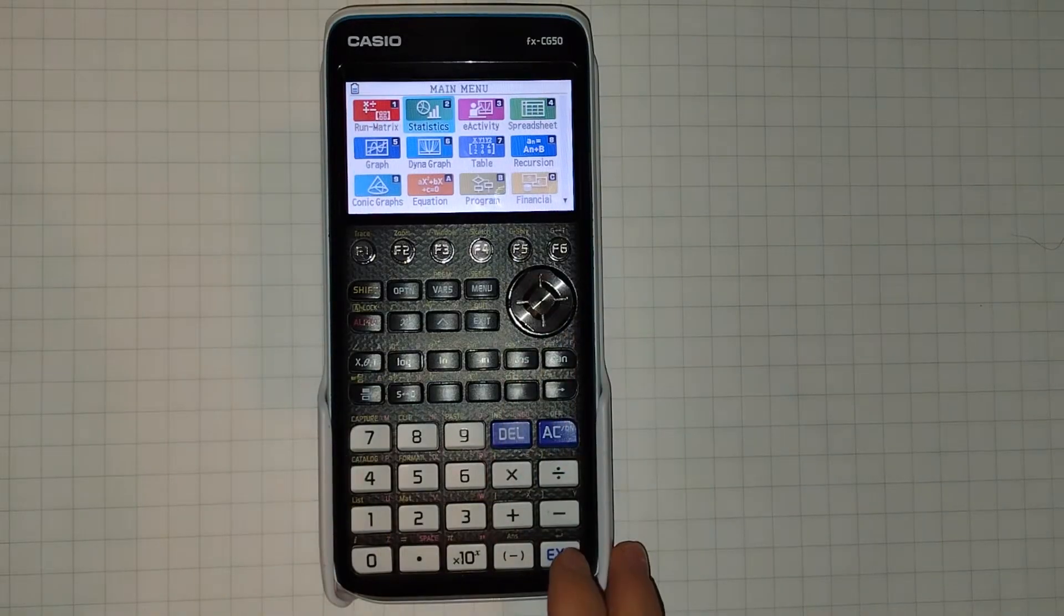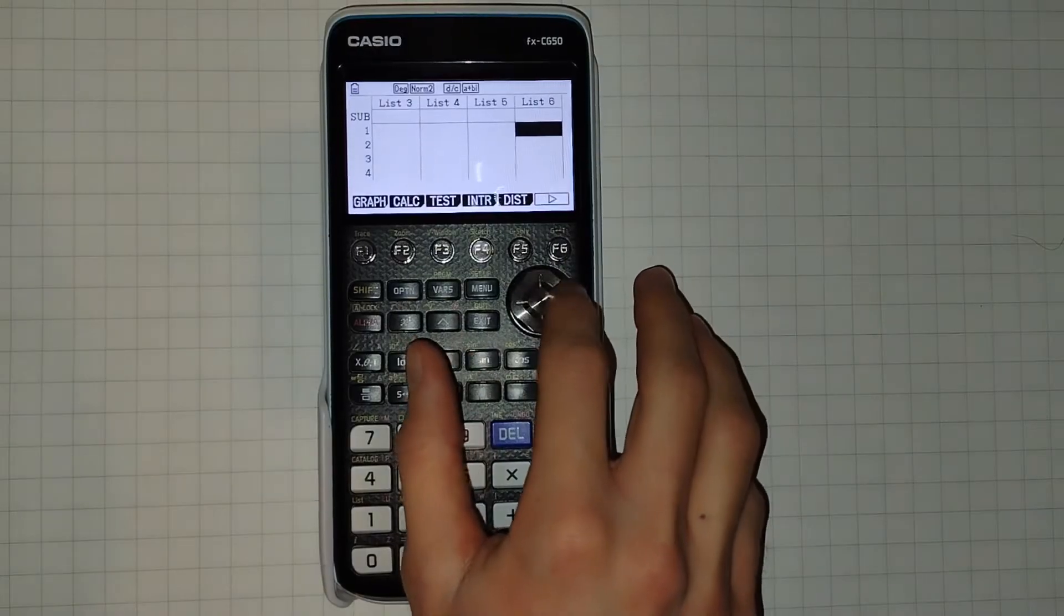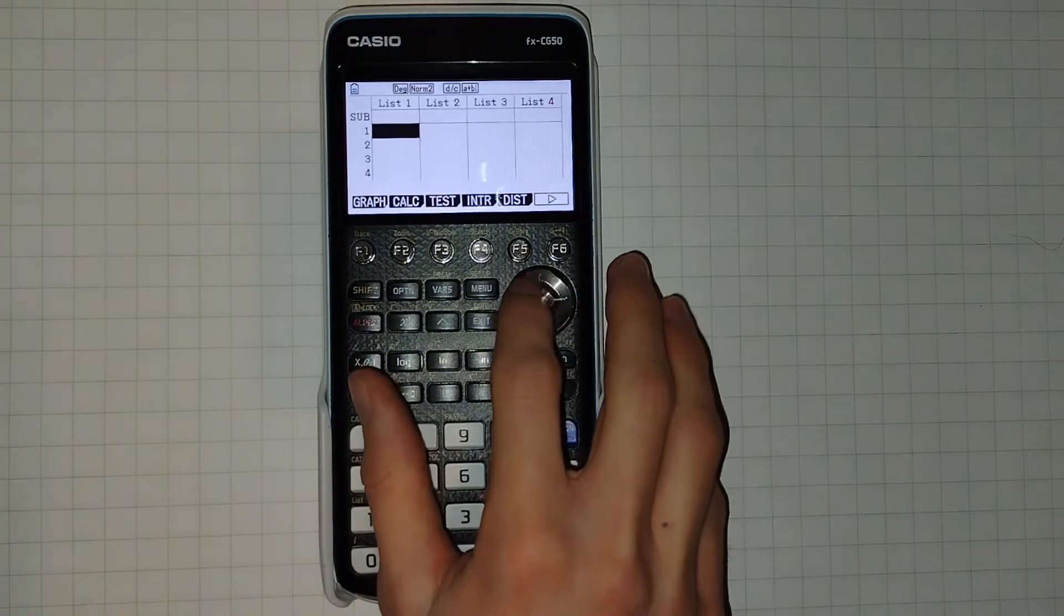It's number two on your home screen, the main menu, and when you enter it you'll be presented with this view, a number of lists into which you can input data.